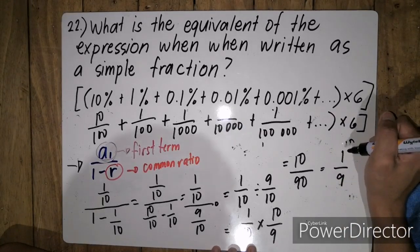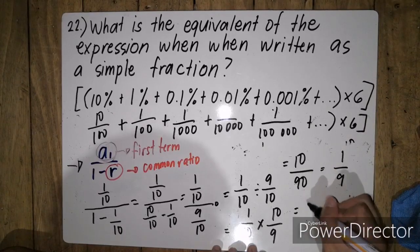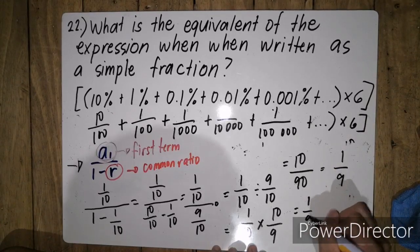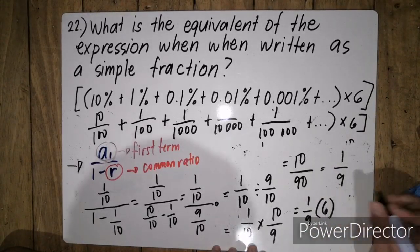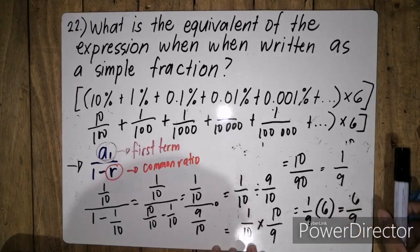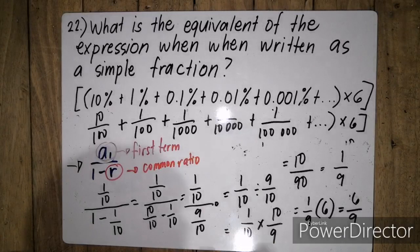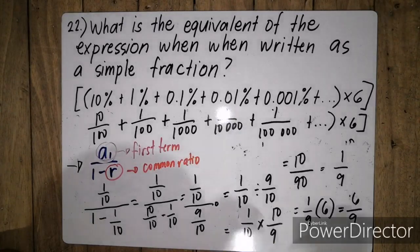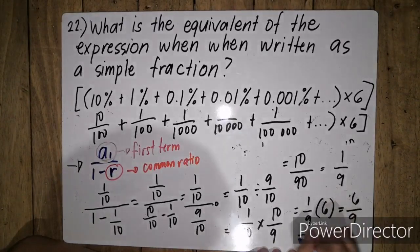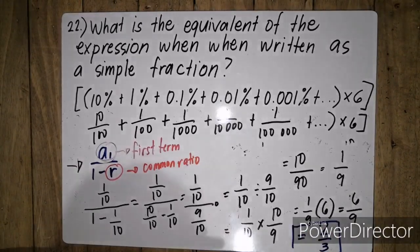But the question is asking us to multiply the final answer by 6. So we have 1 over 9 times 6, which is equal to 6 over 9. That is not yet our final answer because we can simplify 6 over 9 by dividing by 3. So our answer for this problem is 2 over 3.